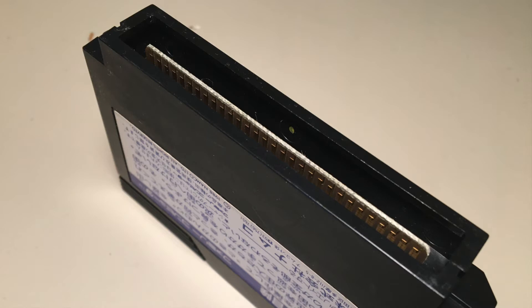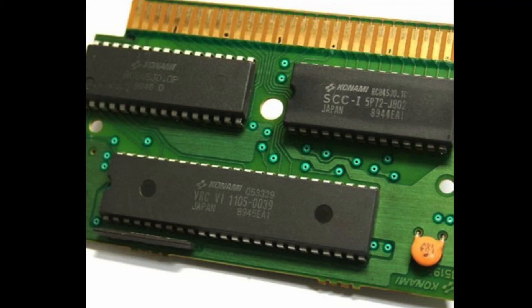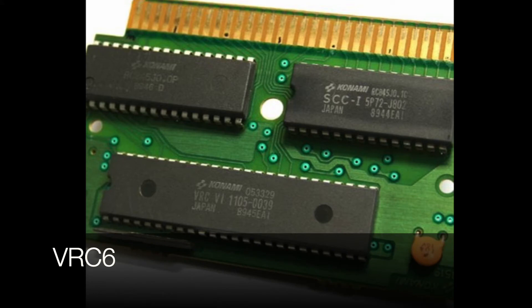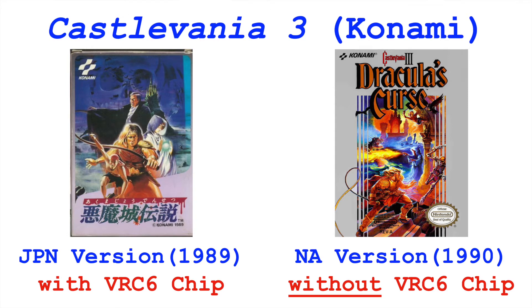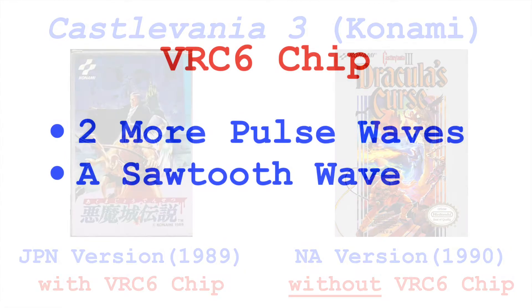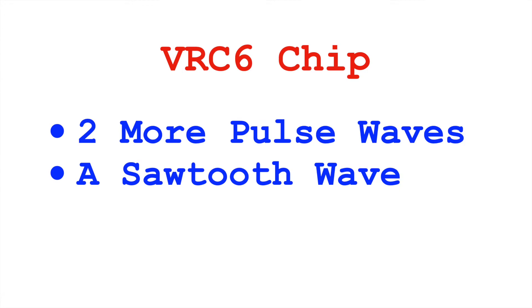There are a few different chips that were added on cartridges. One of the most famous examples is the VRC-6 chip. You can hear comparison videos between Castlevania III released in the US and the Japanese version. Castlevania III was released in Japan in 1989 and in the US in 1990, significantly late in the NES's life cycle. The VRC-6 chip adds two extra square waves and a sawtooth wave.